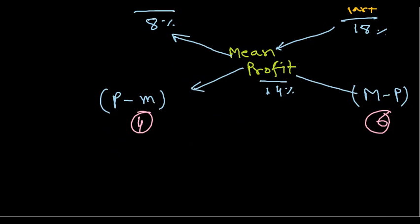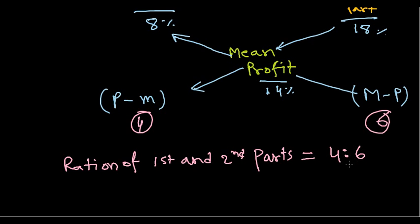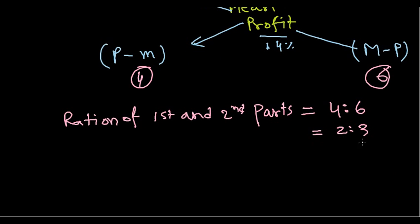So what are the ratios? Remember, it's actually called ratio. Ratio of first and second part equals 4 is to 6, or we can write it as 2 is to 3, because that's the same thing: 4 is to 6 or 2 is to 3.